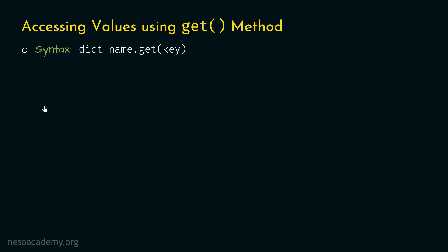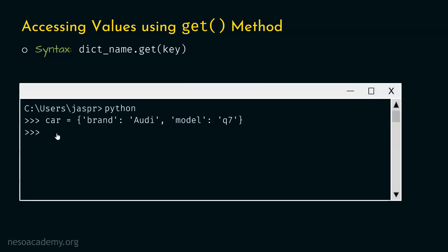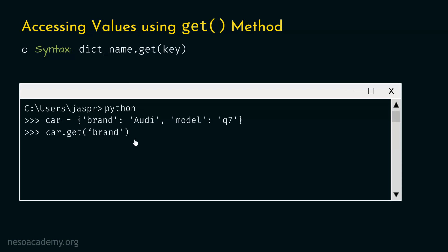For example, let's open our command prompt and consider the same car dictionary with two key-value pairs: brand Audi and model Q7. This time we want to access the value Audi through the get method. We will type the name of the dictionary, then dot, then get, and within parentheses type brand. So let's type car.get(brand) and hit enter. We will get the same value Audi.